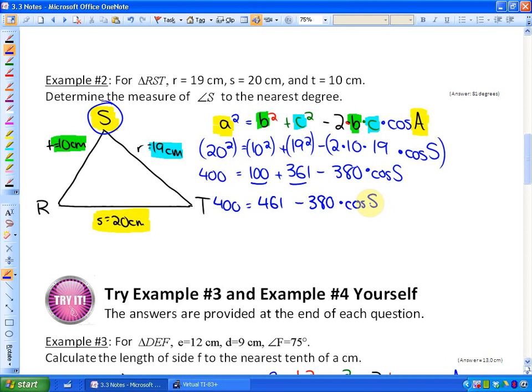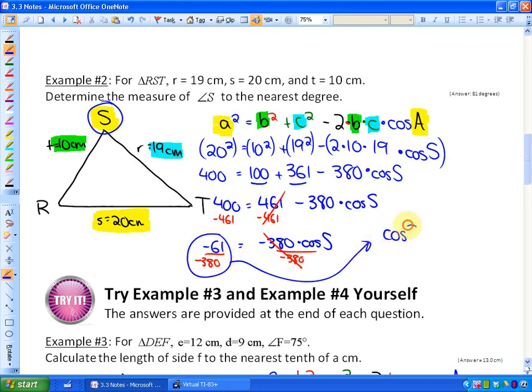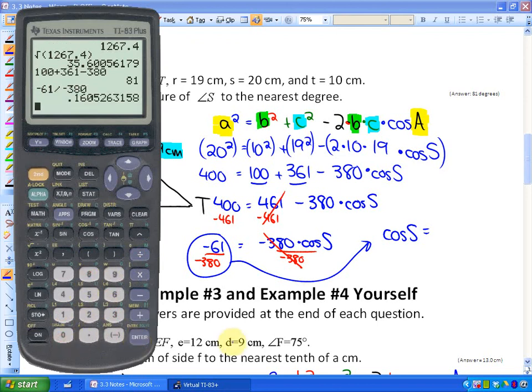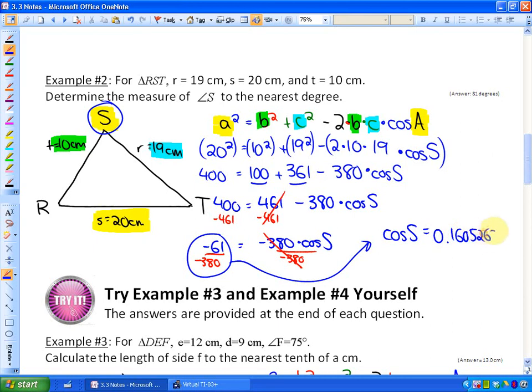Now we need to start solving for angle S. What we need to do is subtract 461 because we want to isolate the cos S next. So 400 minus 461 is negative 61. That's equivalent to negative 380 times the cos S. And the next step is to divide by the coefficient, negative 380. We're going to have that cos S is equivalent to negative 61 divided by negative 380, 0.1605263.